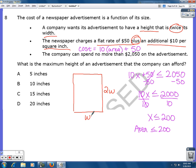So now what I'm going to do is I know that if I multiply the length and the width. So 2W times W. That should give me the area, which needs to be 200 or less.